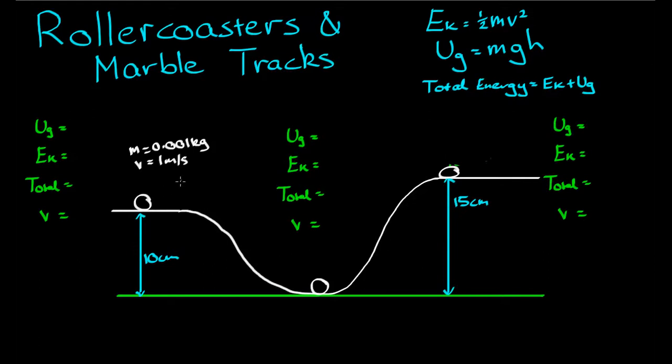So let's get started. What is the gravitational potential energy of the marble at this point here? Well, it's given by mgh. G is a constant, 10, at the Earth's surface when we do year 12 physics.